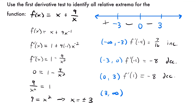Finally, let's test a value between 3 and infinity. I'll pick positive 4. That gives us 7 sixteenths again, because squaring positive 4 and negative 4 gives the same result. So this is a positive slope, and the function is increasing on that interval. We put a plus sign there.